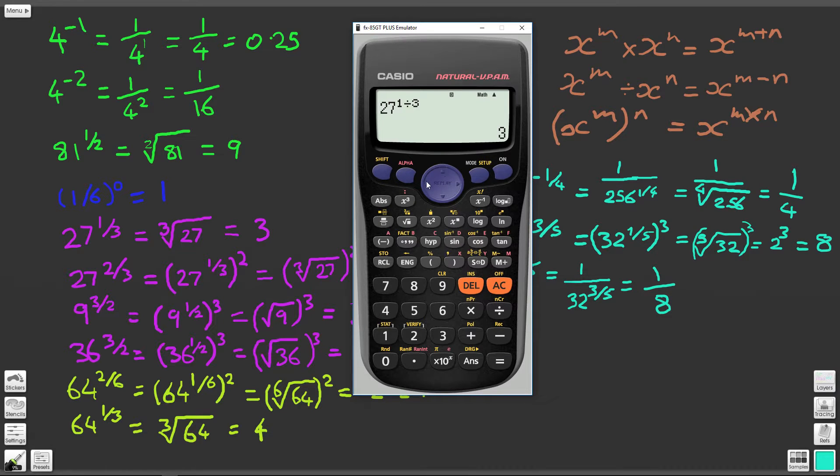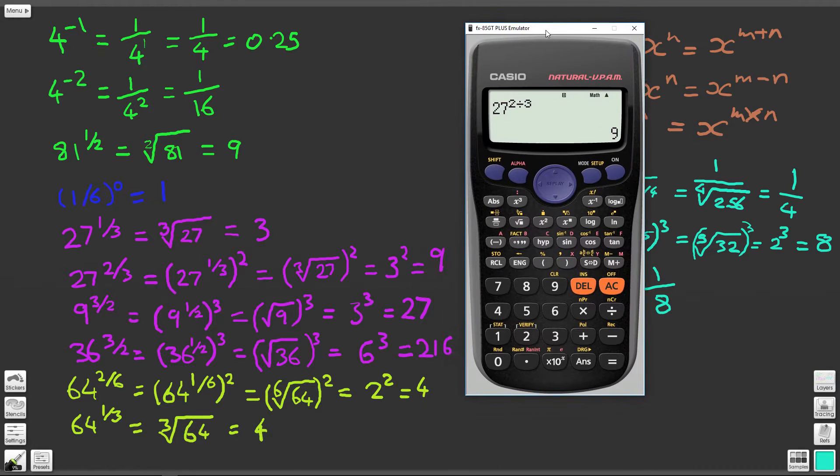Let's make life a little bit easier. Let's change this now from a 1 to a 2. 27 to the power of 2 divided by 3 or 2 thirds, and we get 9. Let's see if that's what we were looking for. Indeed it was.